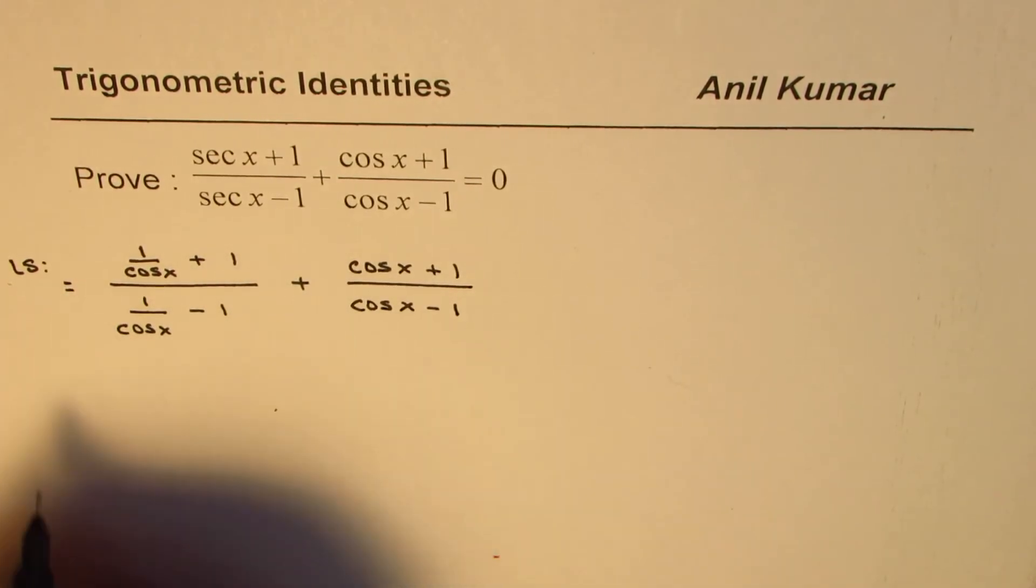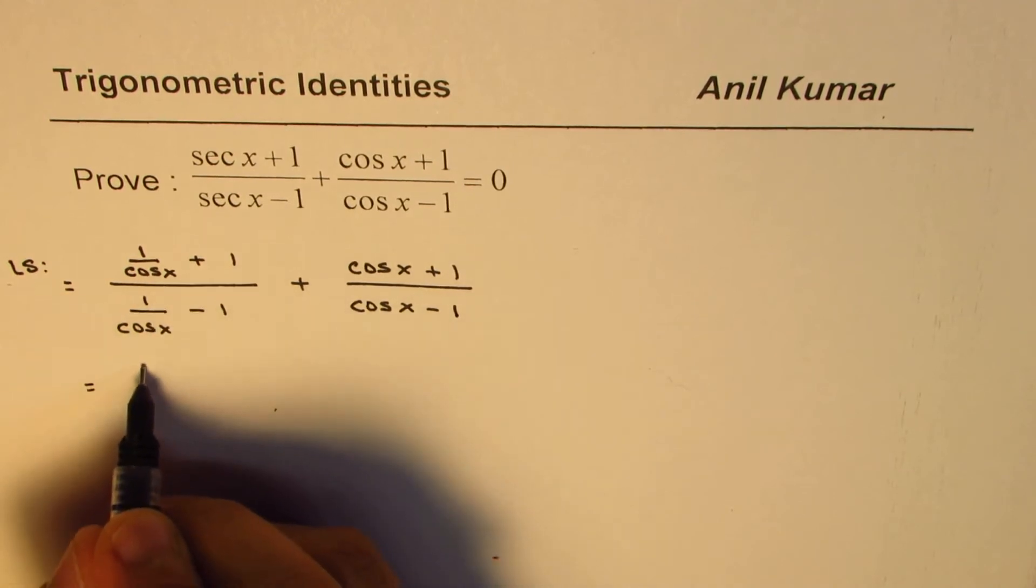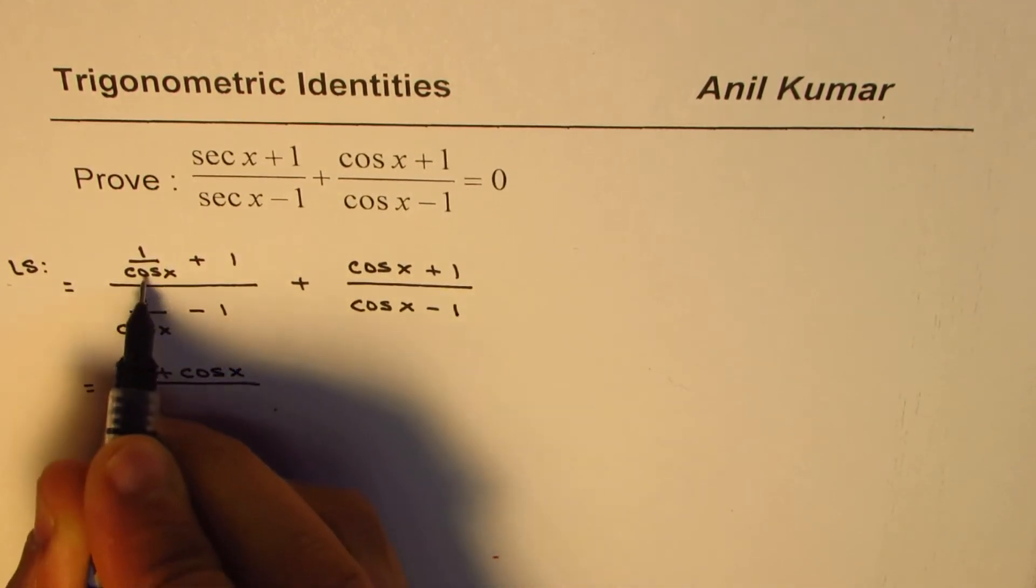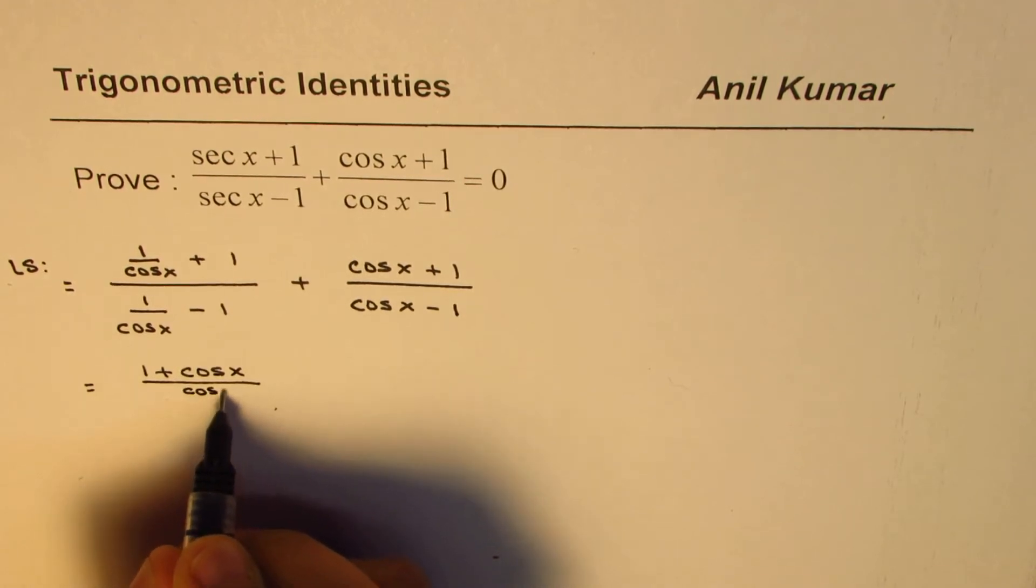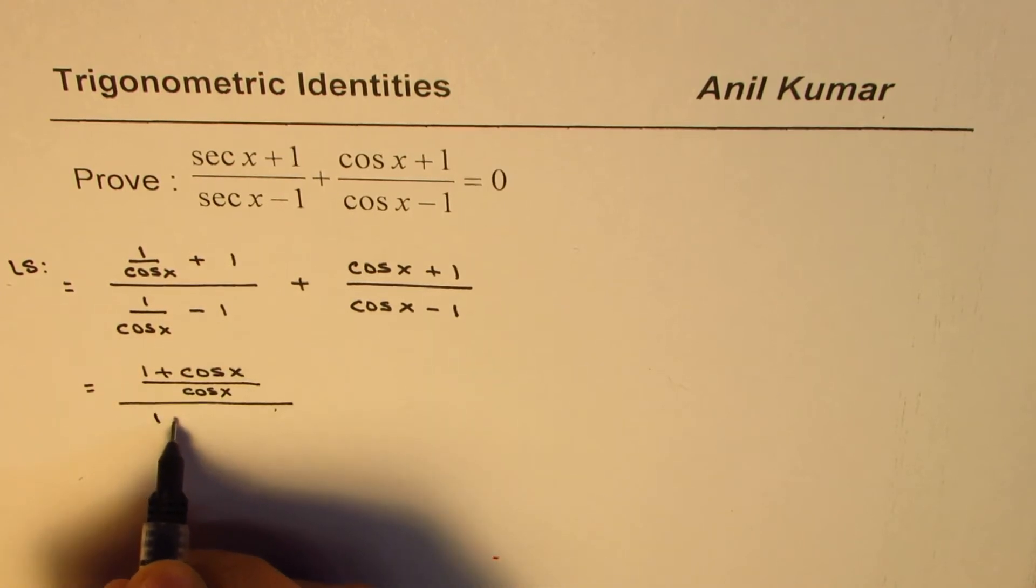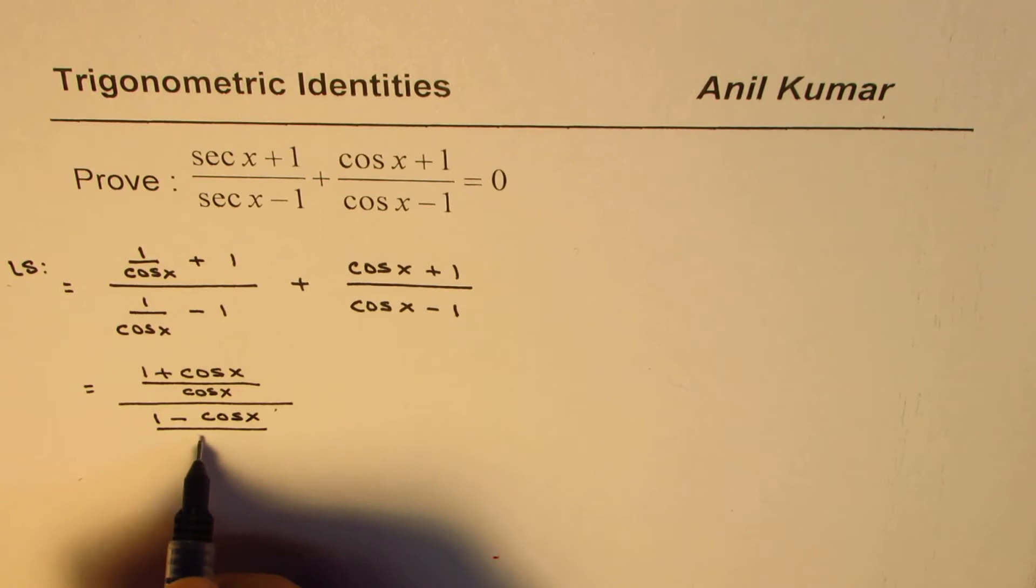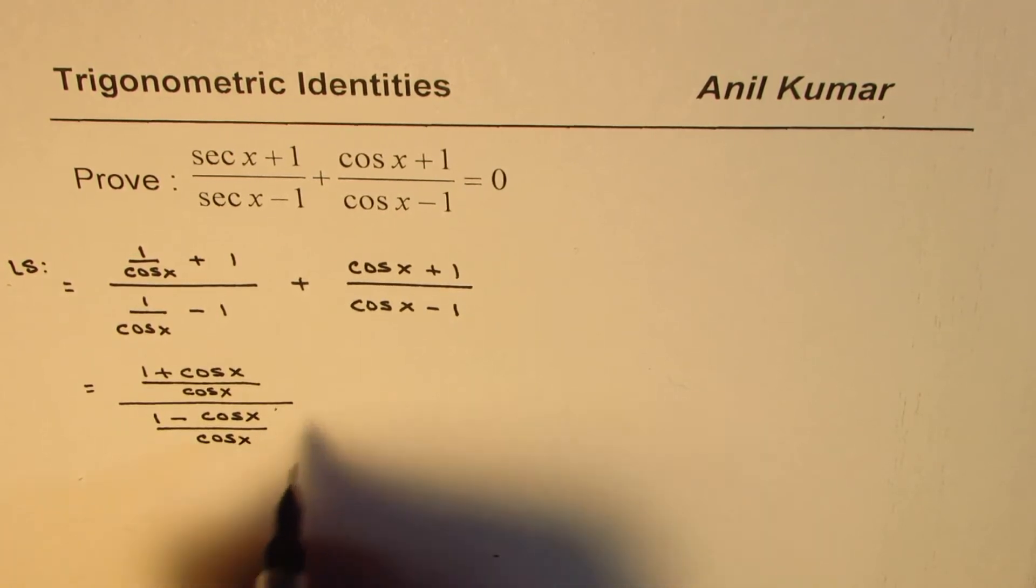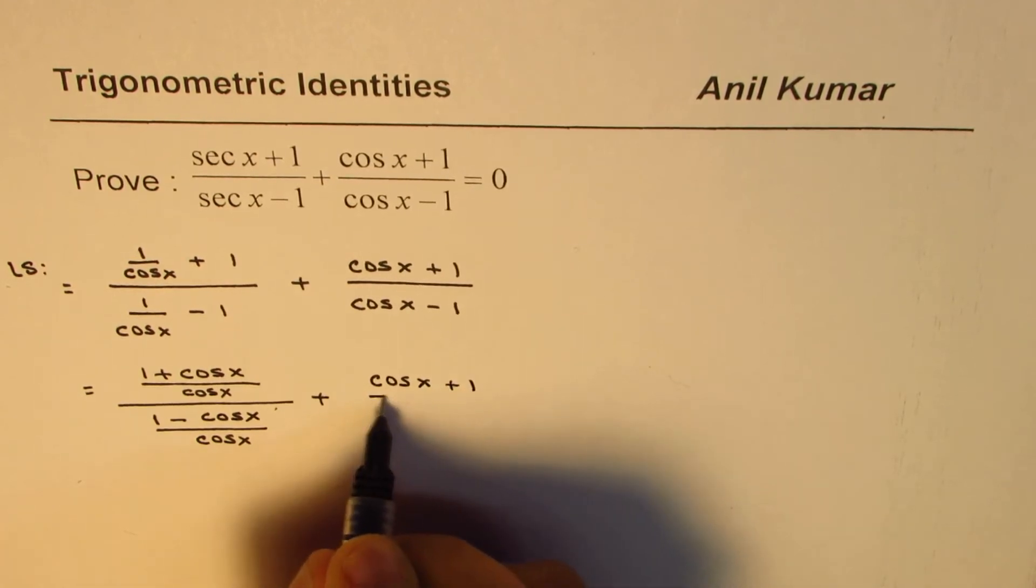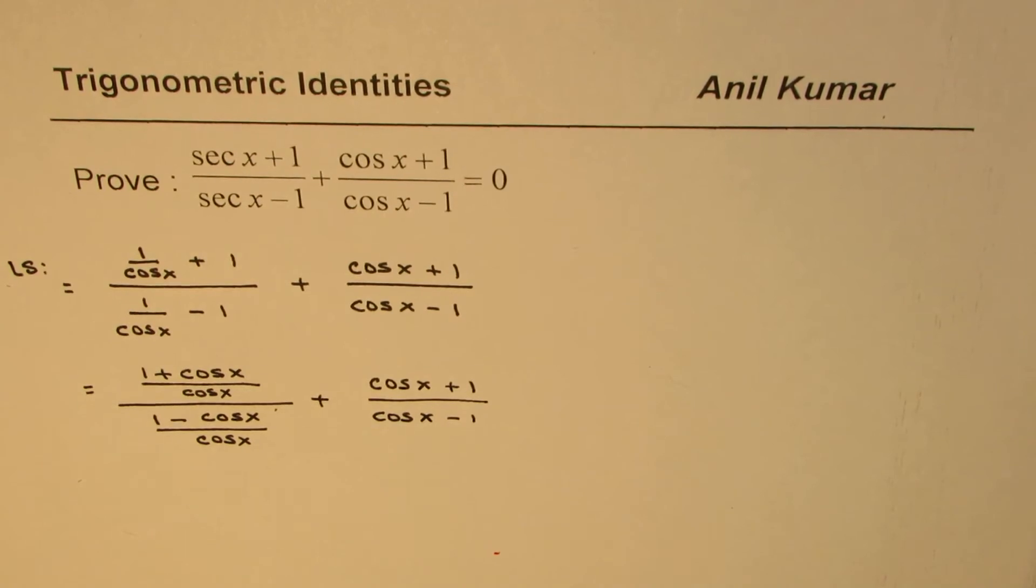So that is the left side. Let's continue. We take a common denominator here of cos x, so we get (1 + cos x)/cos x in the numerator. Everything over here also takes a common denominator to get (1 - cos x)/cos x, all over that, plus the second term (cos x + 1)/(cos x - 1).